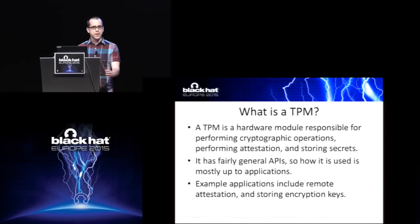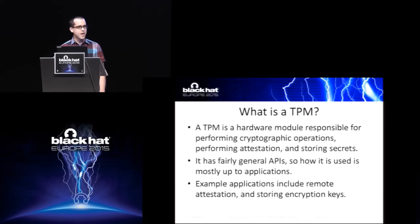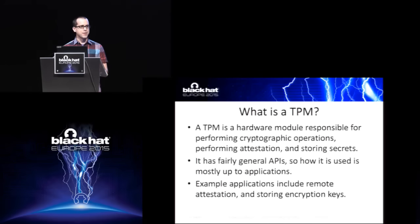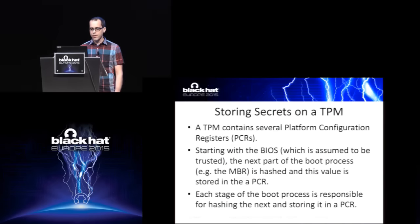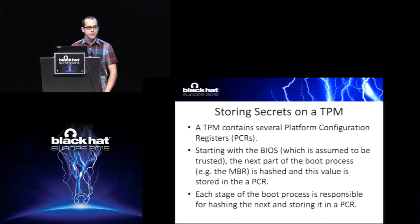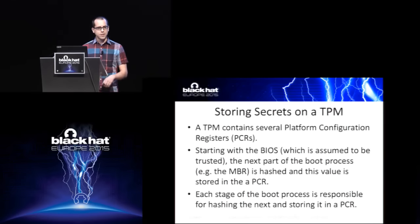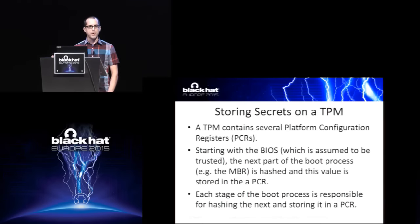The TPM is an open specification for an API that can do a lot of different things. If you're interested in trusted computing, there are a lot of specialized applications. But in our case, what we're really interested in is how the TPM can be used to store secrets — specifically the disk encryption key. A TPM has a number of platform configuration registers called PCRs. The specification has about 24 of them, and Microsoft BitLocker uses about four by default. The idea is that you can load information into these registers about the configuration and status of the device.